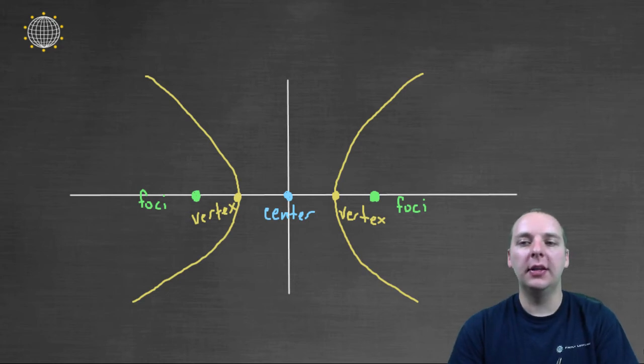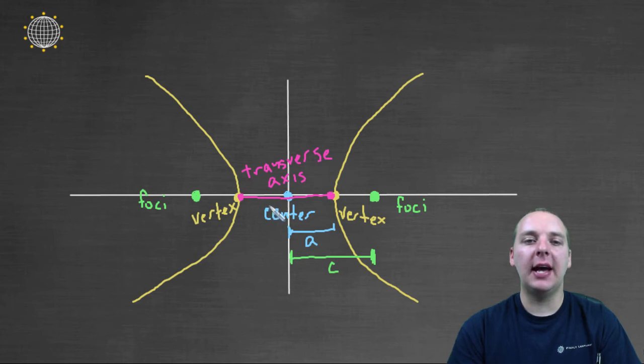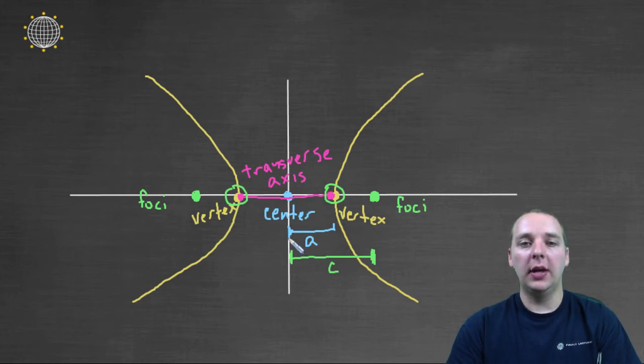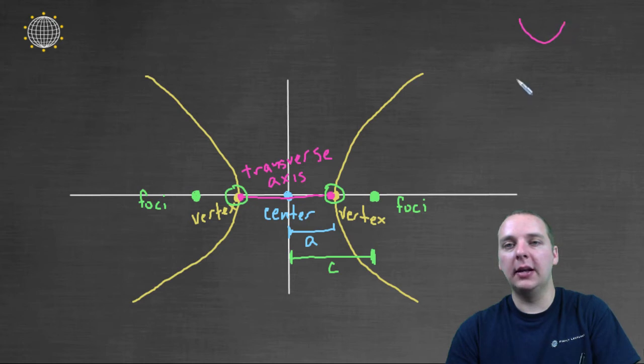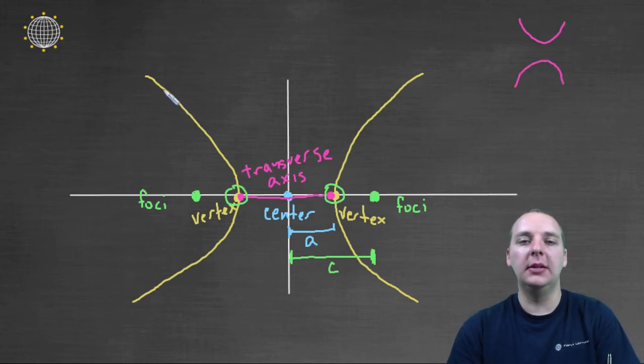Now in addition you also have a few other things. You're going to have something called a transverse axis. The transverse axis is going to be a line segment that goes between one vertex and another. So you can have a horizontal transverse axis like what we have here, or you could have a vertical transverse axis which means your hyperbola will look something kind of like this instead of the way ours looks. This one bends left and right where if you had a vertical transverse axis it would bend up and down. So keep that in mind.